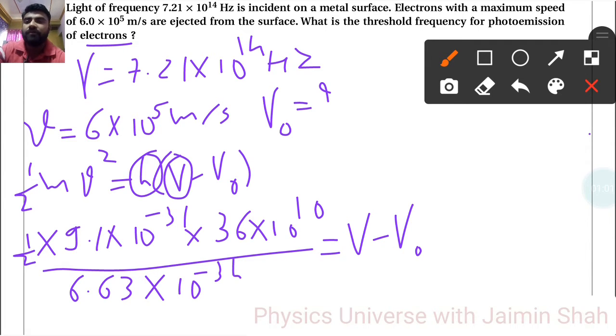Now calculation of this: 9.1 × 36 ÷ 2 ÷ 6.63, so that is 24.70. Left-hand side 24.70 × 10⁻³¹⁺¹⁰⁺³⁴, so that is 10⁻¹³, equals ν - ν₀.